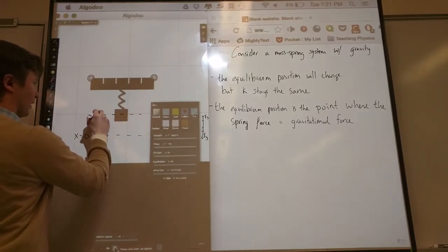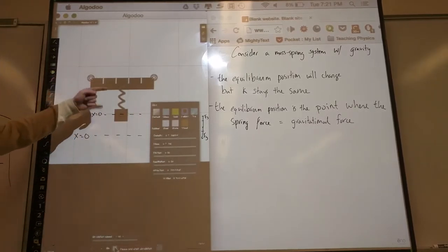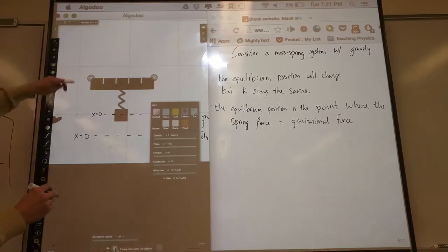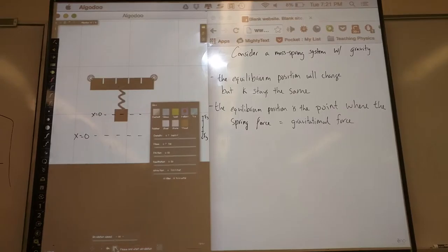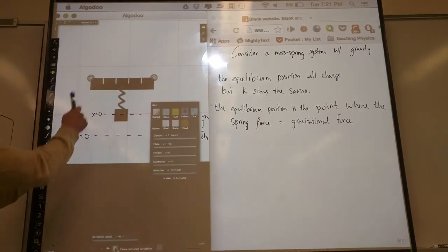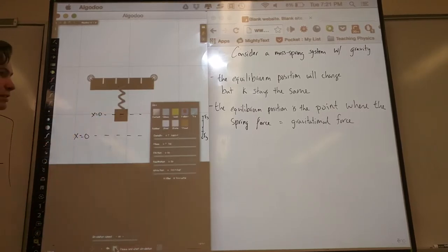And I can consider simple harmonic motion with this new equilibrium position. So depending on where the thing is hanging, the mass that's on it, I'm free to define where I say x equals 0.